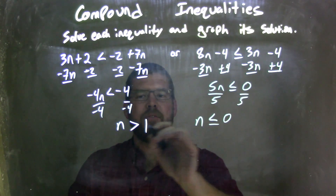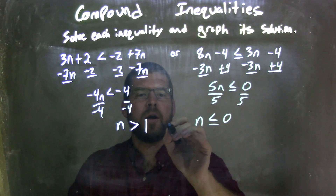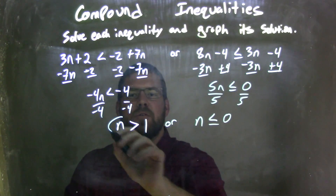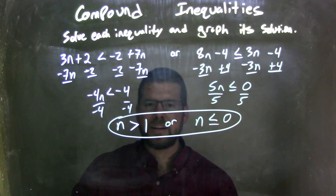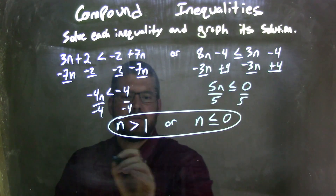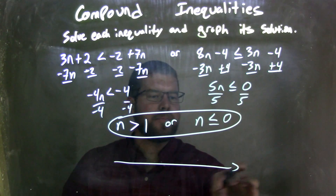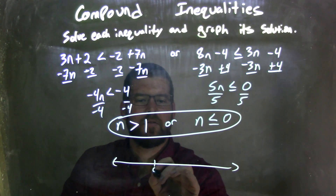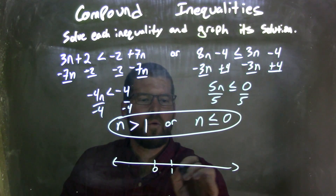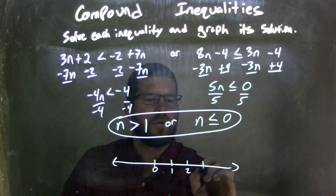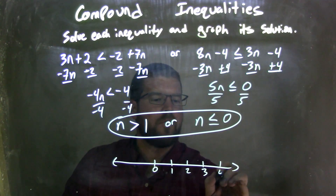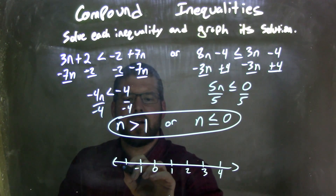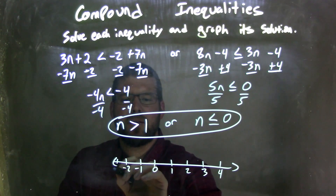So now I have: n is greater than 1, or n is less than or equal to 0. Now I need to graph that, so let me draw a number line. I have 0, 1, 2, 3, 4, and negative 1, negative 2, and negative 3.